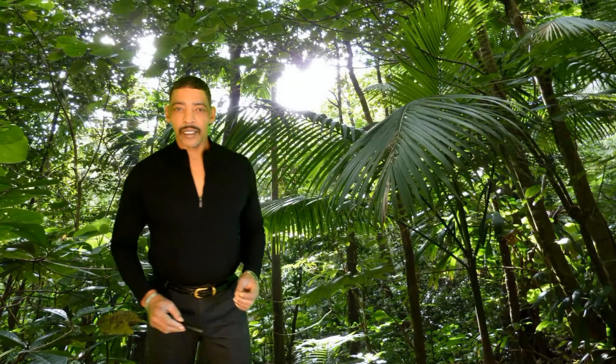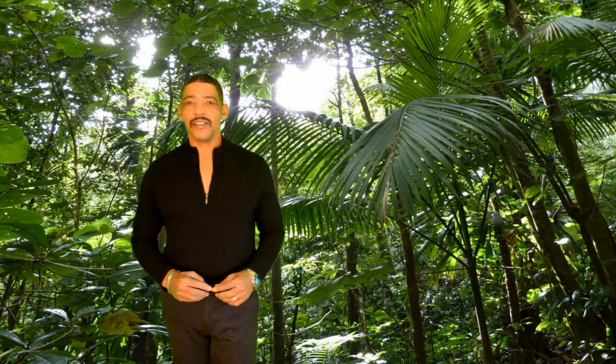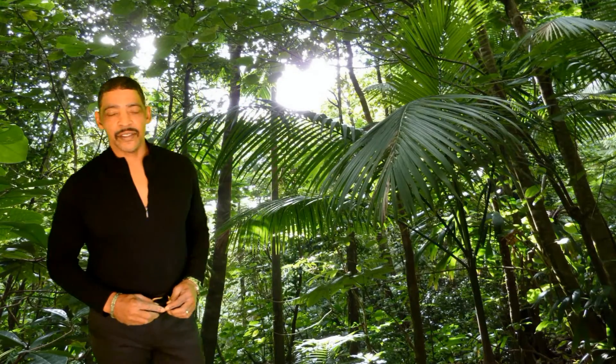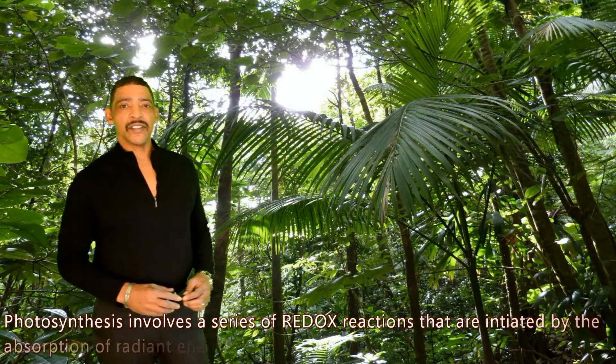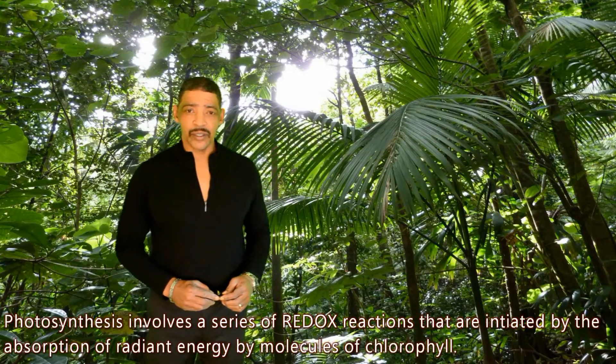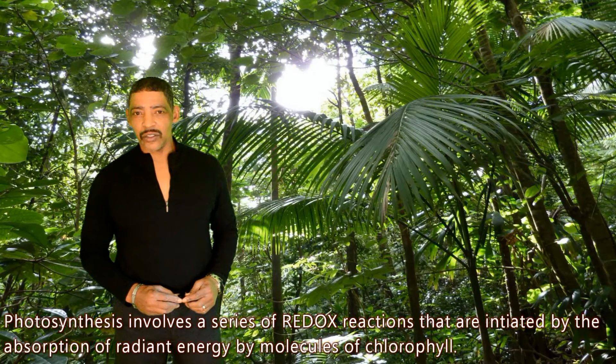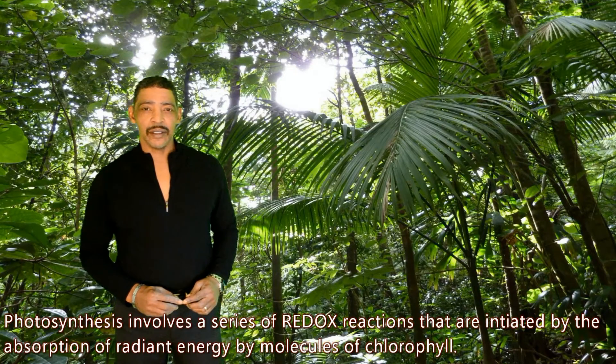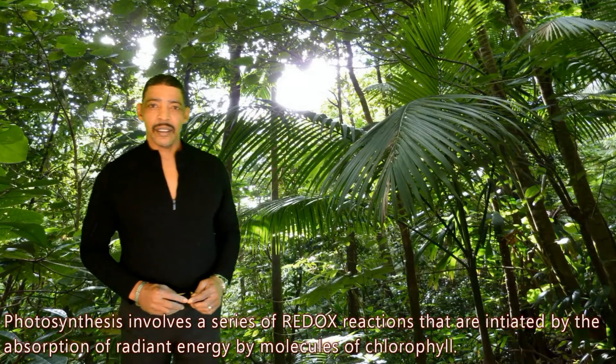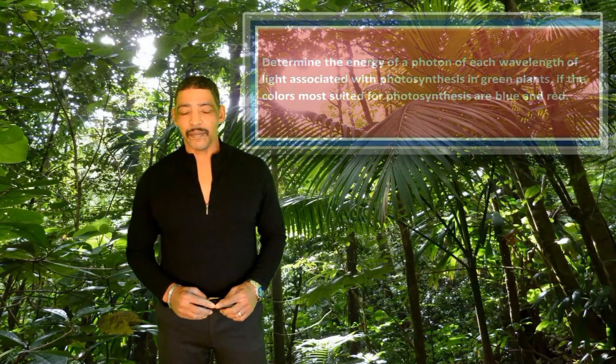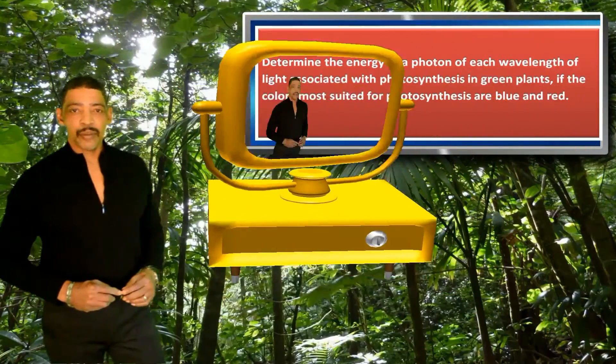There are many instances where biological processes may be explained by physical concepts. One such process is the process of photosynthesis. Photosynthesis is a process that occurs in green plants, where green plants will utilize the energy from electromagnetic radiation to generate carbohydrates and oxygen from the reactants, carbon dioxide and water.